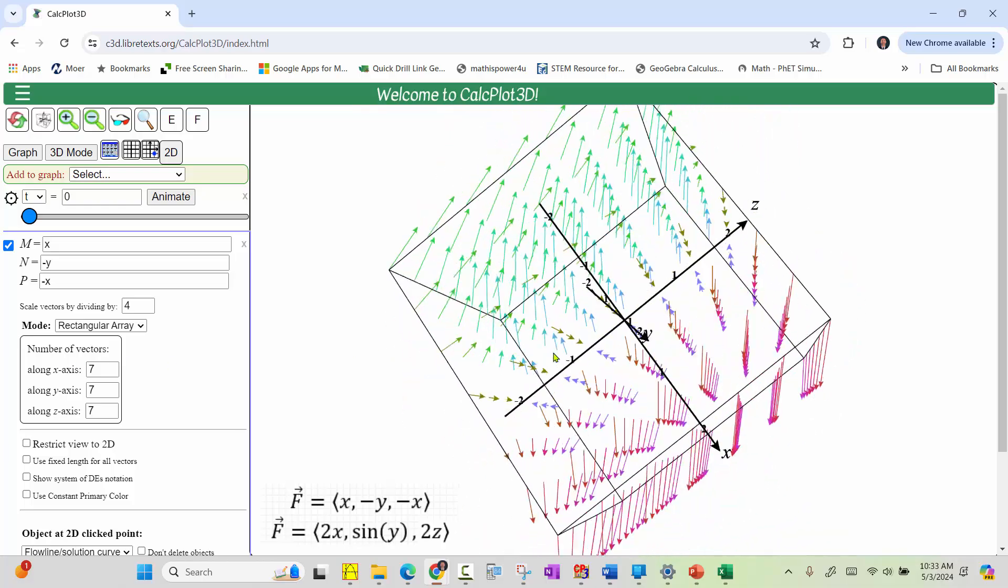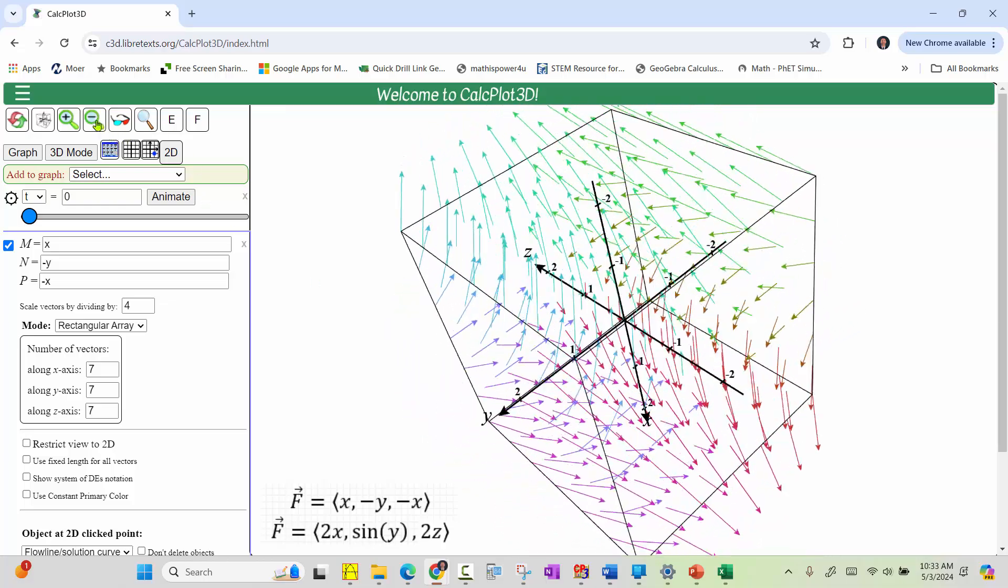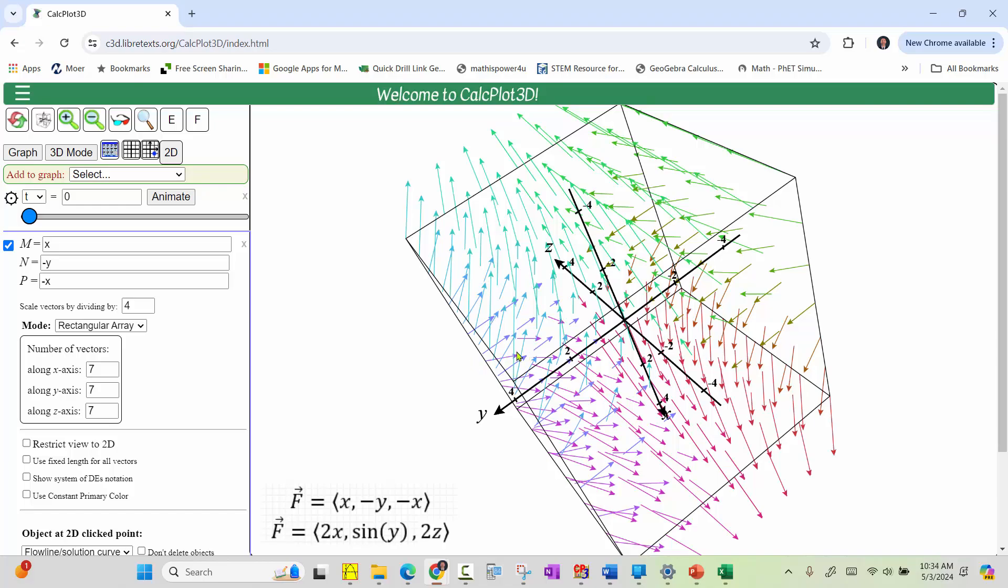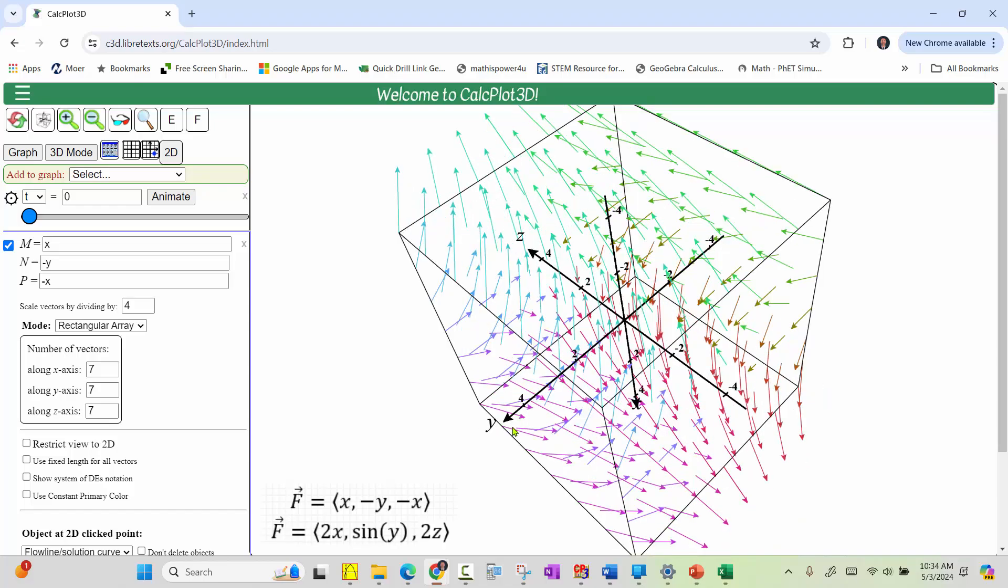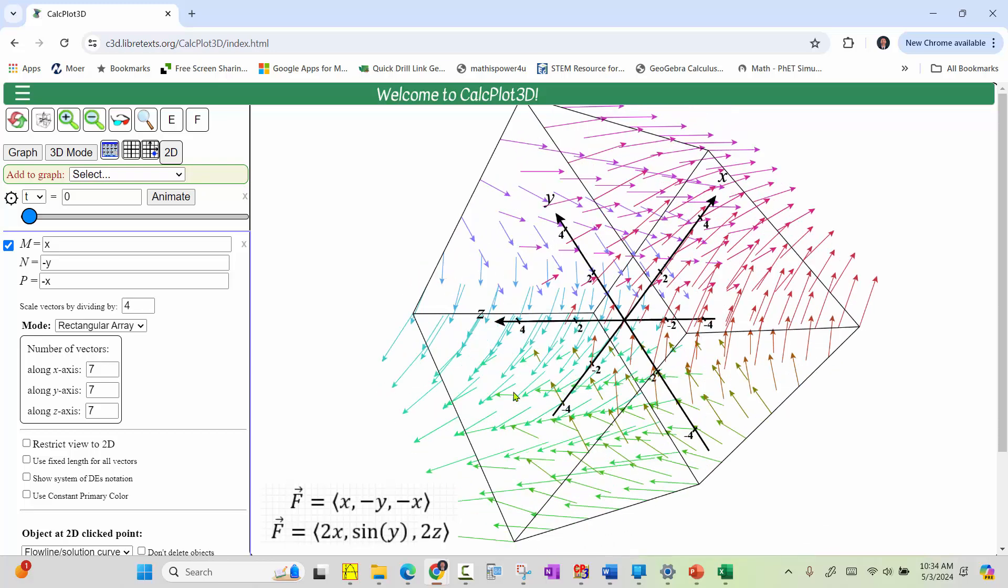We can also zoom in and zoom out by using the plus or minus at the top. But notice when we do this, nothing changes because of the scaling and the number of vectors along the axes. If we change the vectors being divided by four to, let's say, six, this will make the vectors shorter.